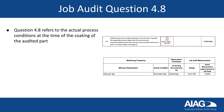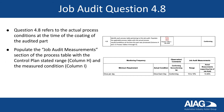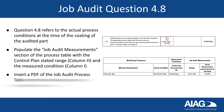Question 4.8 refers to the actual process conditions at the time of coding of the audited part. In the process table, populate the job audit measurement section with the control plan's stated range and the measured condition. Insert a PDF of the process table into the job audit document, including the ratings.